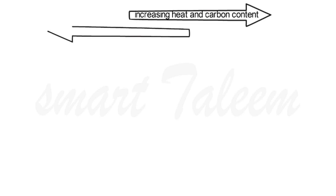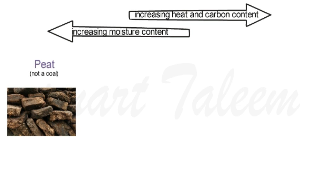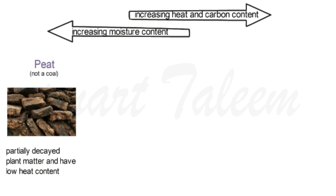Another picture explains this in more detail. You should keep in mind that from left to right, heat increases, and the depth of the earth's crust and carbon content also increase. On the left side — the upper layers of earth — moisture is more and heat content is less. When wood gets buried deeper, it converts into peat. Peat is not coal; it represents partially decayed plant matter due to bacterial action, and it has very low heat content, meaning burning it does not release much heat.